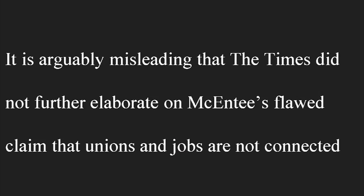From the Huffington Post and the Atlantic to the New York Times and NBC. My favorite example of this comes from a grassroots organization dedicated to catching the bias of other news sources, named AIM. I love this because of the sheer irony of it — an incredibly biased news article calling out other news groups for being biased. The entire article is incredibly biased throughout, but this sentence in particular is noteworthy: 'It is arguably misleading that the Times do not further elaborate on McEntee's flawed claim that unions and jobs are not connected.'